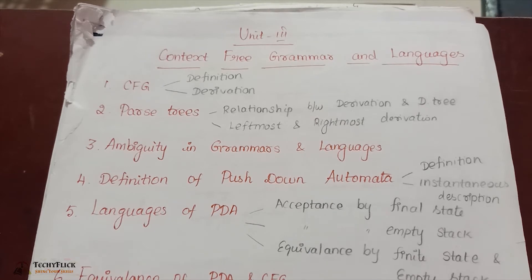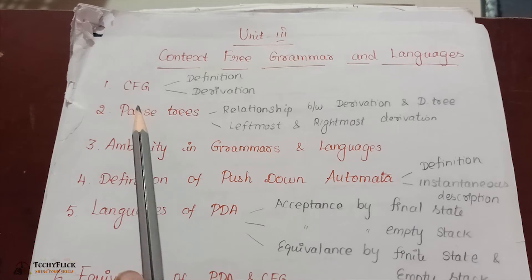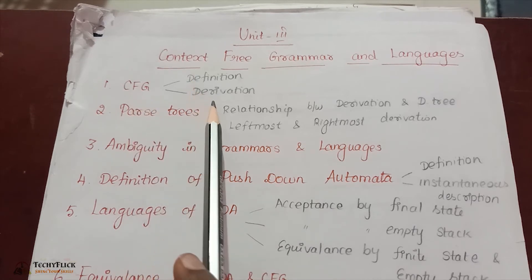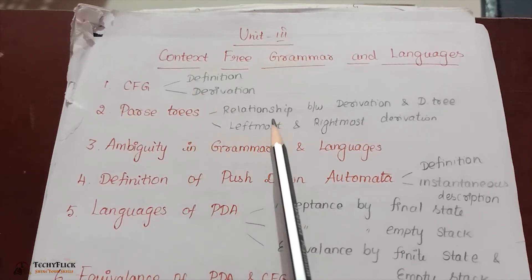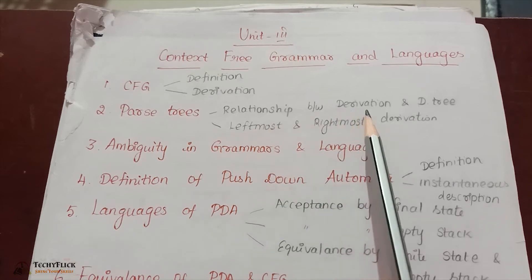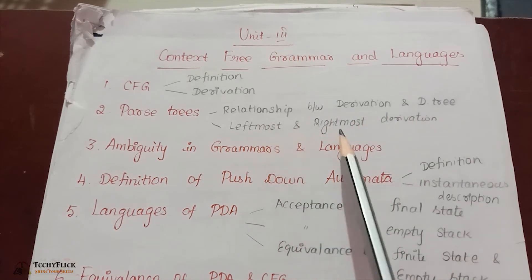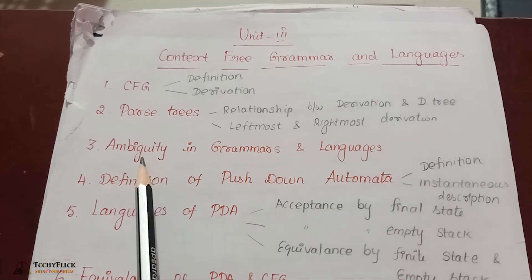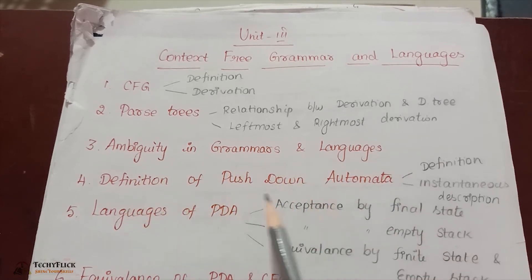First topic: CFG — Context Free Grammar, Definition and Derivation, Parse Trees, Relationship Between Derivation and Derivation Tree, Leftmost and Rightmost Derivation. Third topic: Ambiguity in Grammar and Languages. Fourth topic: Pushdown Automata — Definitions and Instantaneous Description.